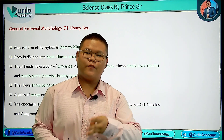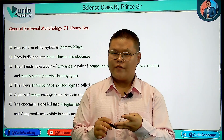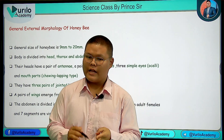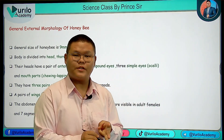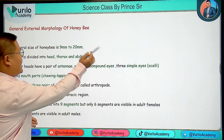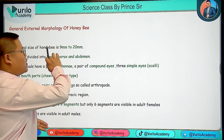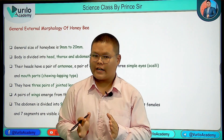There are three forms: Drone Bee, Fertile Female which is the Queen Bee, and Worker which is the Sterile Bee. I am going to talk about the general characteristics.